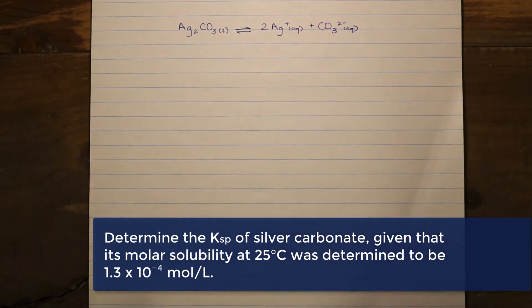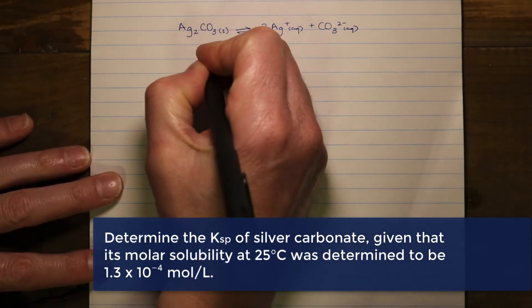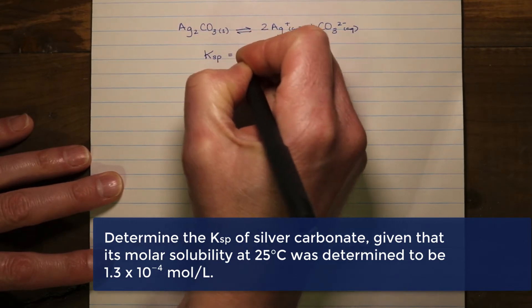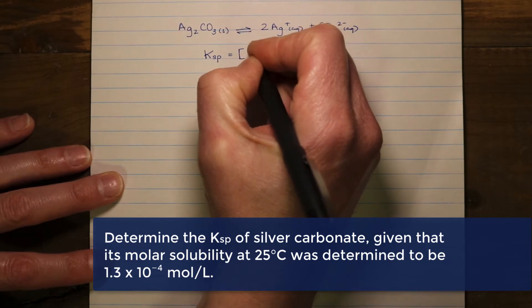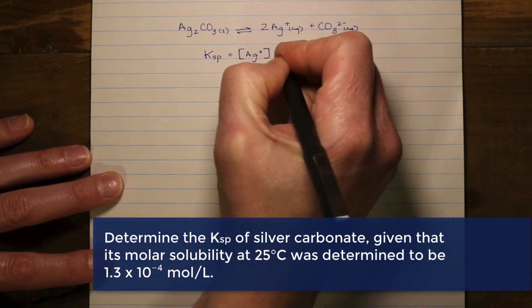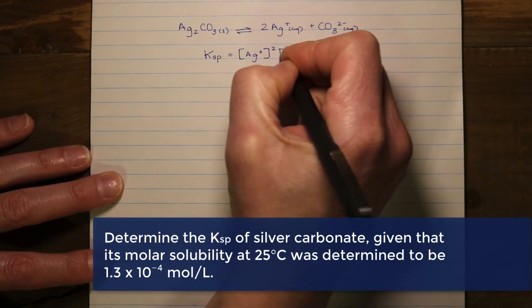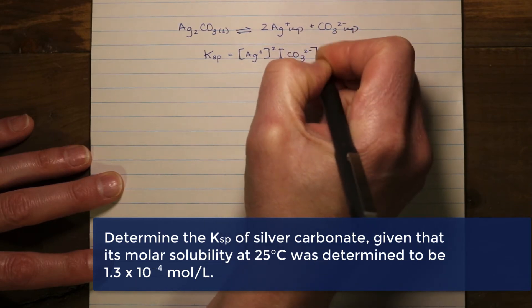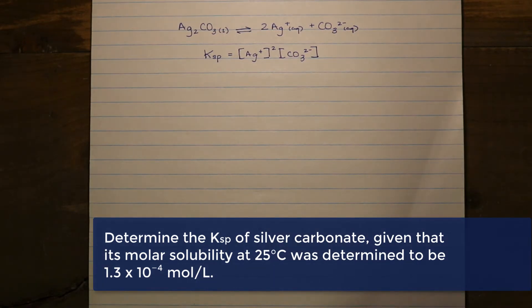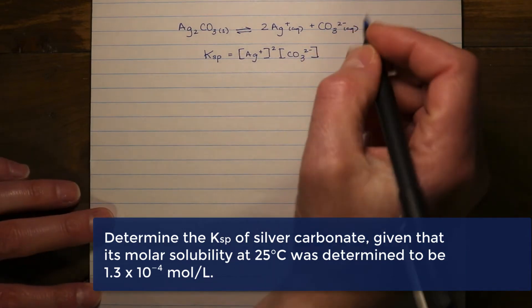When we put together our equilibrium expression, we're really only taking a look at the products. And just like any other equilibrium expression, it is going to be the concentration of the products raised to the appropriate exponent, represented by the coefficient from the balanced chemical equation. But keep in mind that we do not have anything in the denominator, because there is not going to be anything on the reactant side that we're going to include.